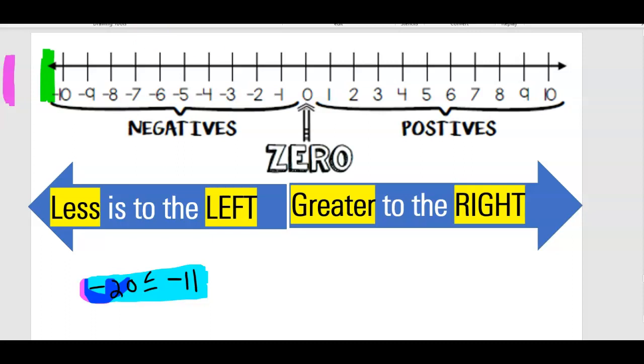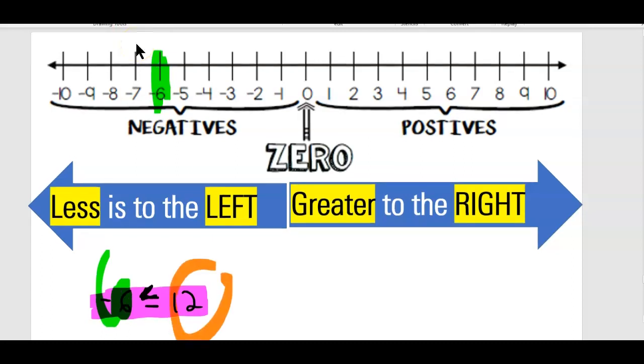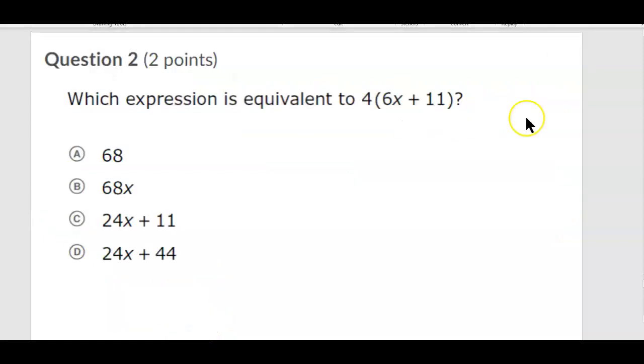Remember, the more you go this way, the greater the number. The more you go this way, the less the number. Negative 6 and 12. Negative 6. 12. We'll do orange. This is way like way over here. All right. That's it for that one. Okay.